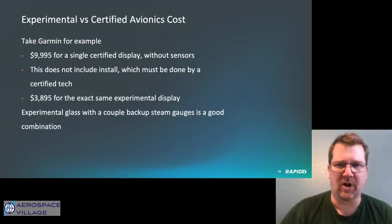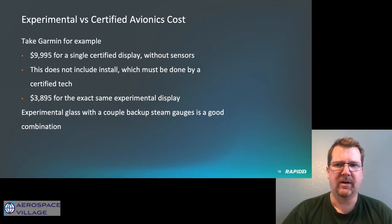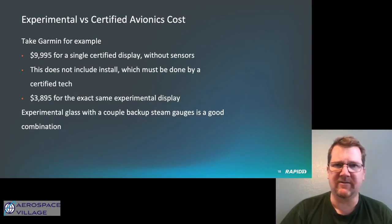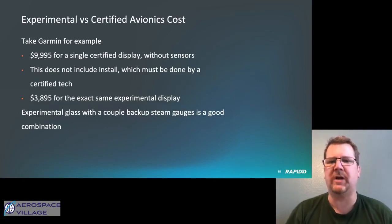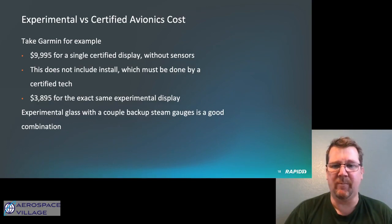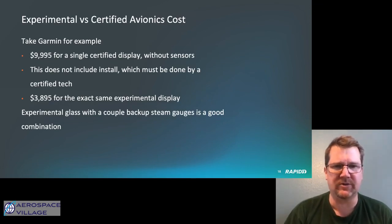On avionics cost: take the Garmin G3X as an example. They make certified and experimental versions of the exact same display running the same firmware — it's just been blessed by the FAA and received certification approval. The certified display is $9,995 just for the display — without any instruments, magnetometer, airspeed sensors, electronic gyros, or engine instruments. The experimental version of the exact same display is $3,895. My opinion: the best choice is experimental glass with a few emergency backup steam gauges.